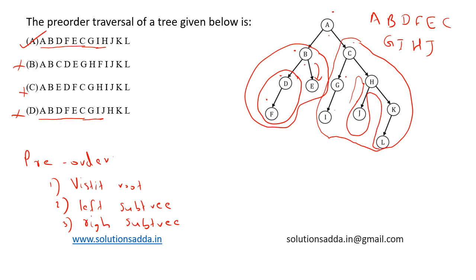Then we print K and L, and this traversal is also completed. K L - so this is matching with option A. So option A is the correct answer.